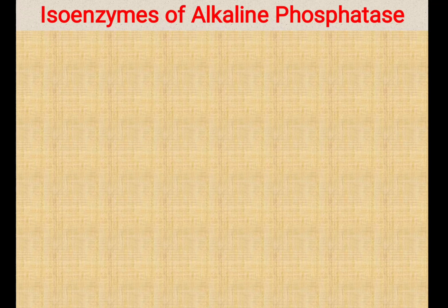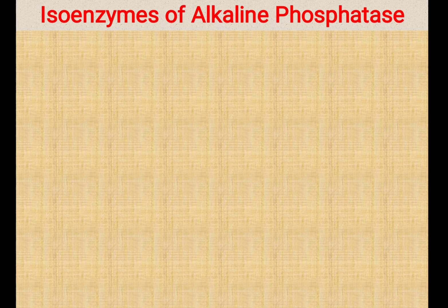Today's topic is about isoenzymes of alkaline phosphatase, also called ALP, which is one of the important investigations in liver function tests. Interestingly, this alkaline phosphatase is one enzyme but it is produced by different tissues or organs. It is categorized into six different varieties, so you have to remember that ALP is one enzyme which has six different isoenzymes.